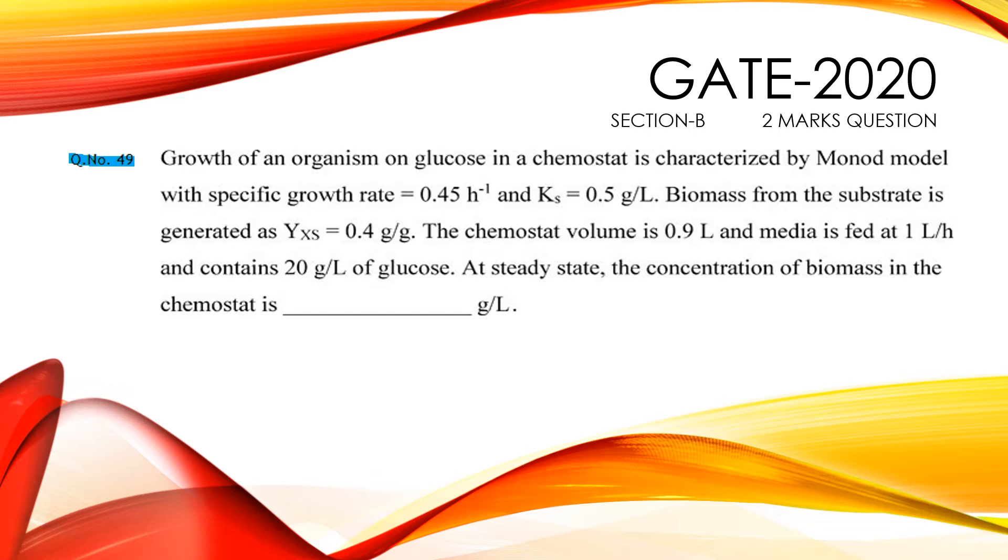Biomass from the substrate is generated as Y_xs equals to 0.4 g per gram. The chemostat volume is 0.9 liter and the media is fed at 1 liter per hour and contains 20 g per liter of glucose.